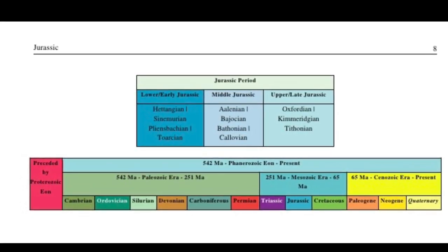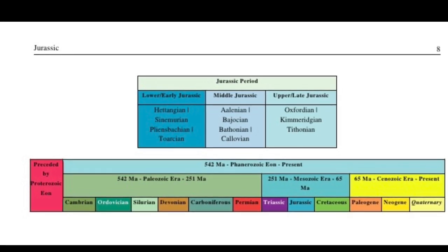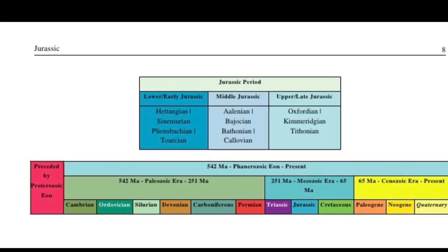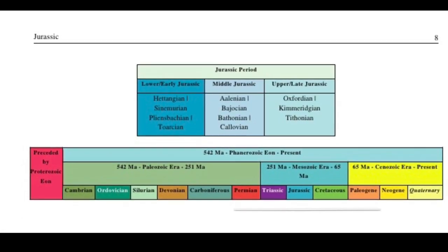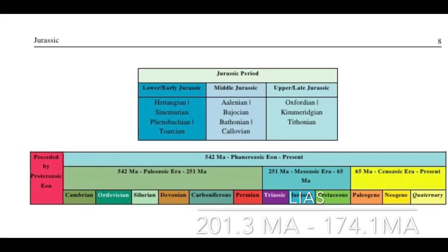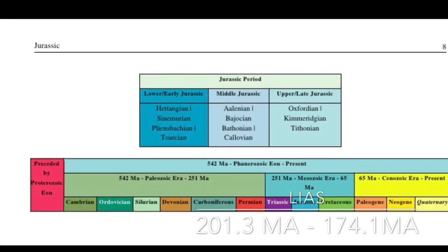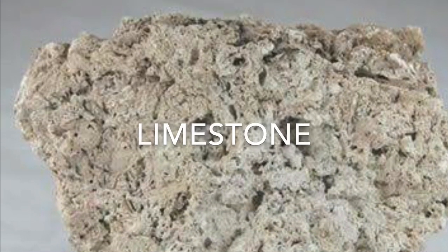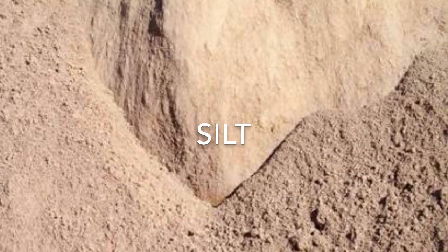The Lower Jurassic in the European lithostratigraphy is also called Lias. The age is from 201.3 million years to 174.1 million years ago. They are mainly limestones with some clay and siltstone.